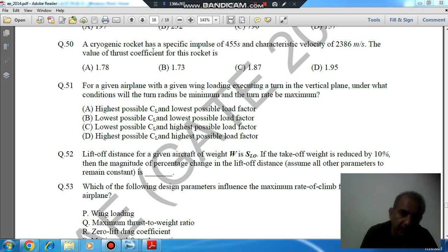A cryogenic rocket has a specific impulse of 455 seconds and characteristic velocity of 2386 meters per second. The value of thrust coefficient for this rocket is: